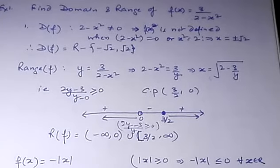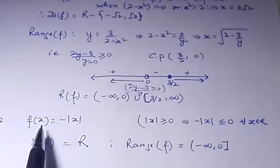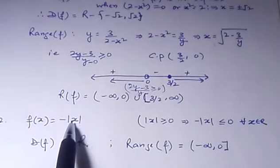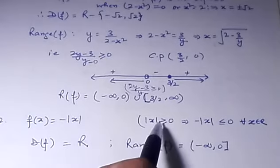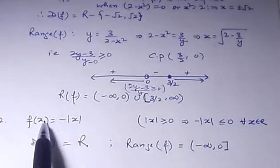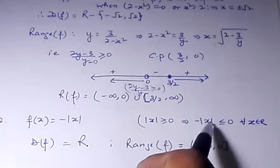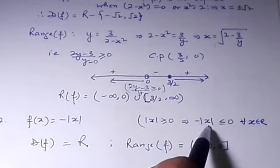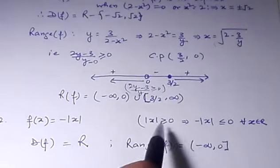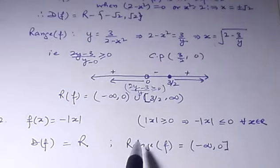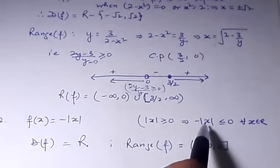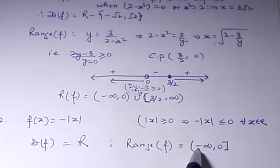The next question: f(x) = |x|. For the domain, we know that the modulus of x is defined for all real values. Since |x| ≥ 0 for all x, the domain is all real numbers, from minus infinity to infinity. For the range, since |x| is always greater than or equal to zero, the range is [0, ∞).